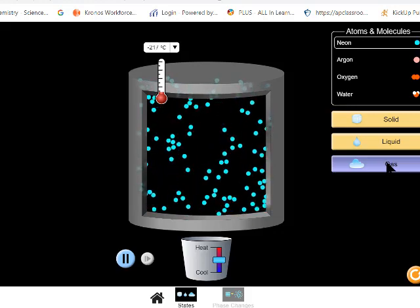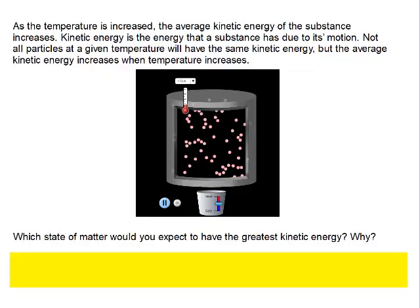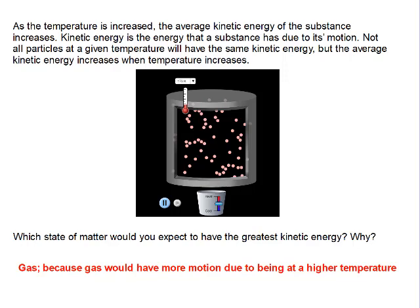You should be able to clearly see that gas has the most kinetic energy. Gas has more motion due to being at a higher temperature. In order to go from a solid to a liquid to a gas, we increase the temperature. As we increase the temperature, the molecules start moving more and are able to break the attractions between them, turning into the next phase.